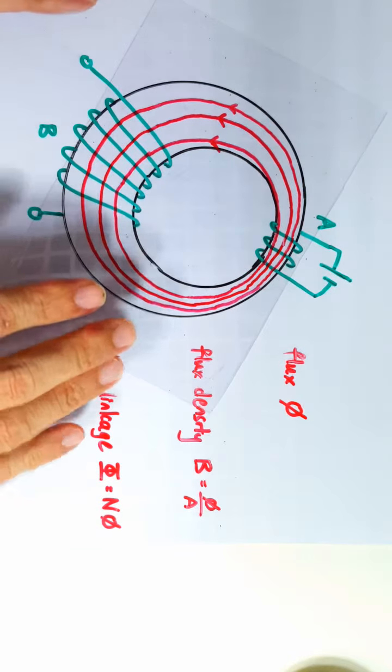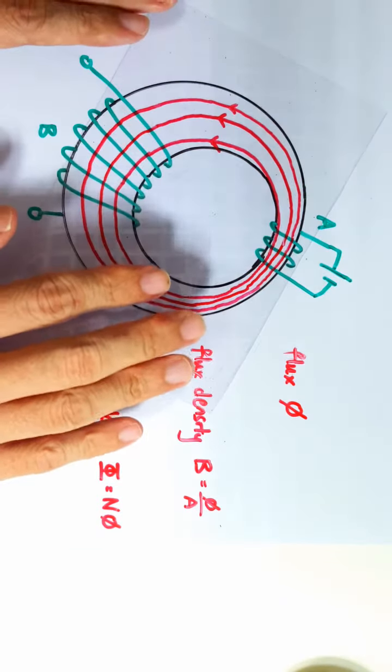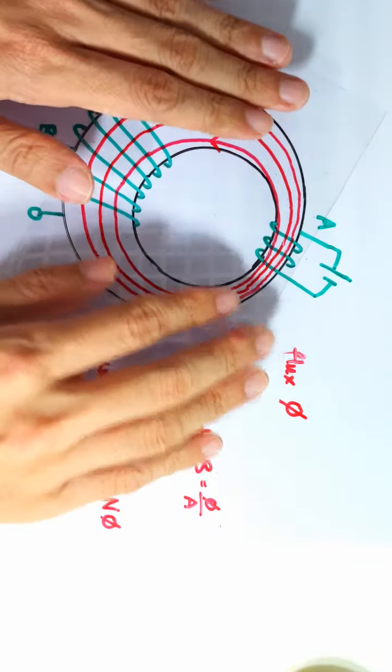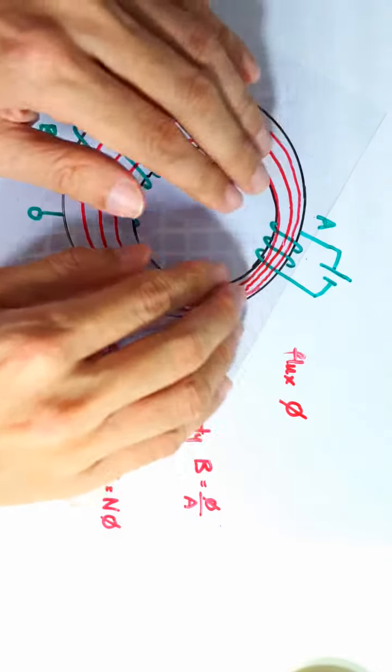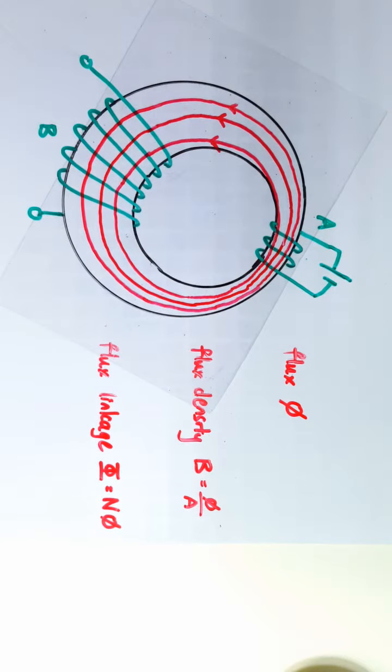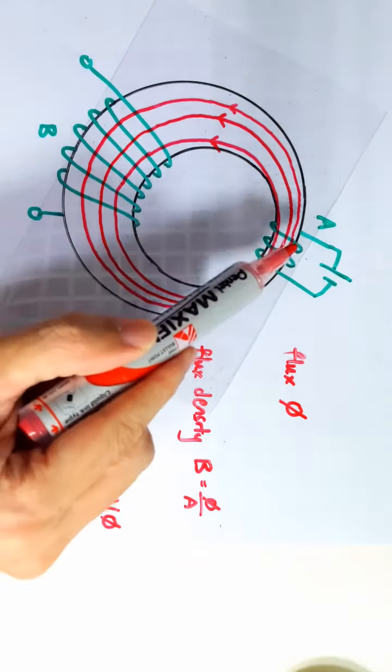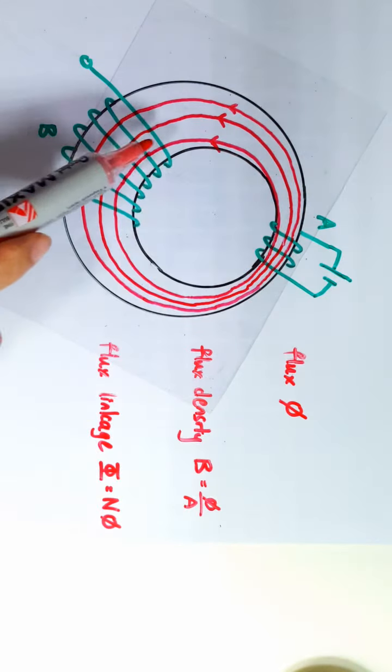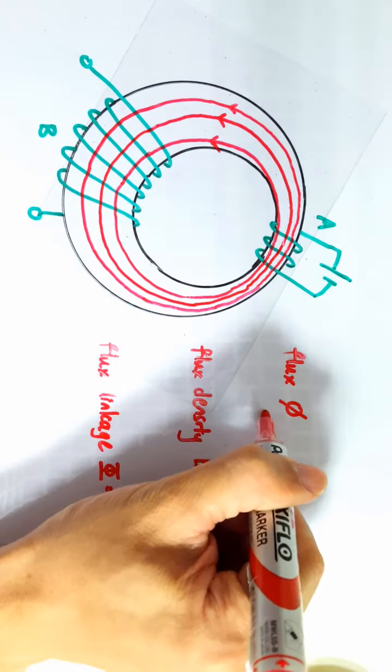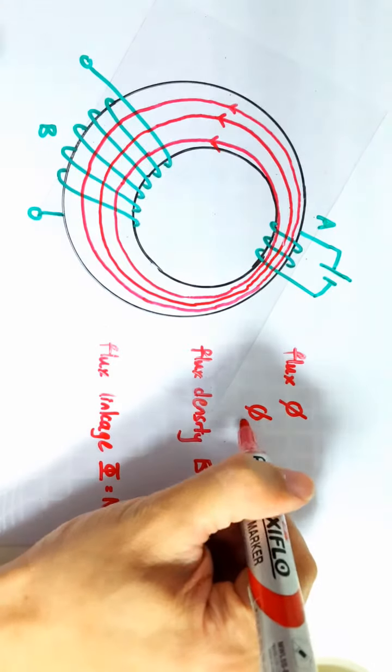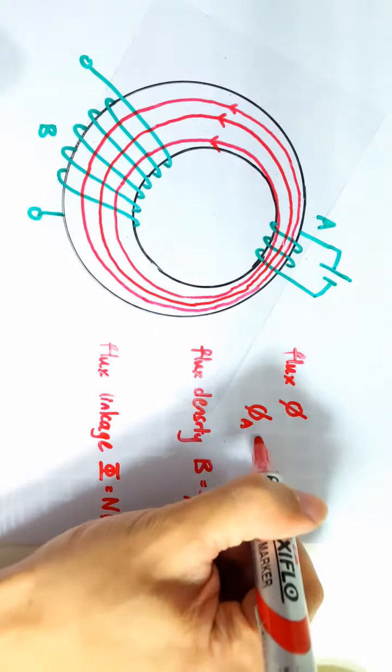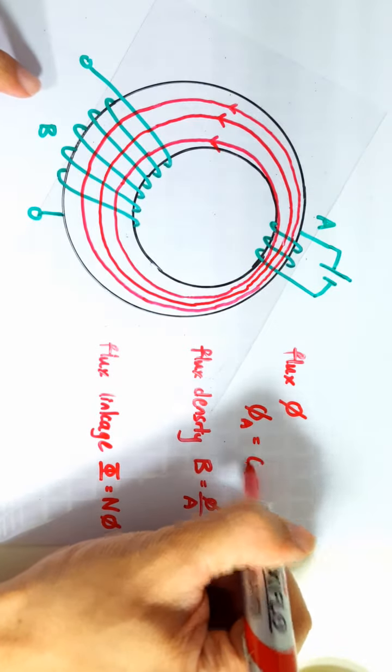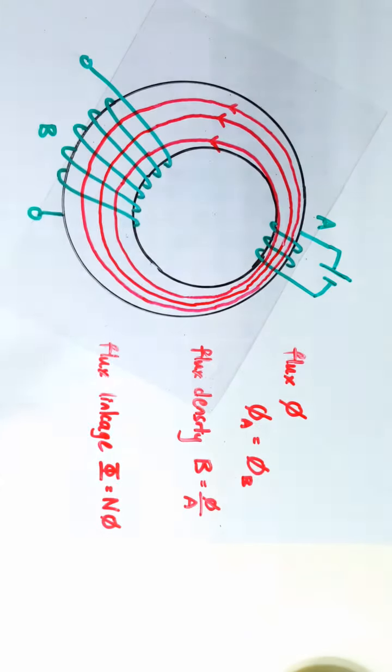So the key is there's no magnetic flux leakage. None of the flux produced by this coil leaks outside the iron core. If that's the case, then you realize that whatever magnetic flux is captured by this area here is also the magnetic flux captured by this area here. In other words, the magnetic flux seen in this section here is the same as the magnetic flux seen in this section here. They are equal.